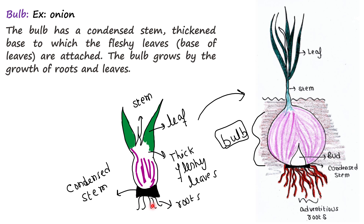Roots arrive from this stem, and the whole swollen structure is called a bulb. If you pluck an onion and keep it in soil, after some time leaves and roots appear from this reduced or condensed stem, which will grow into a matured plant.